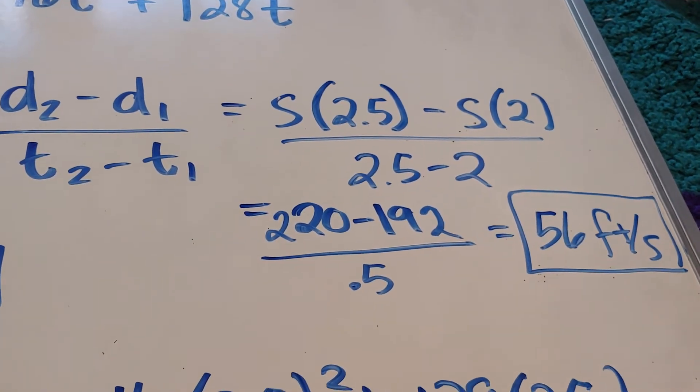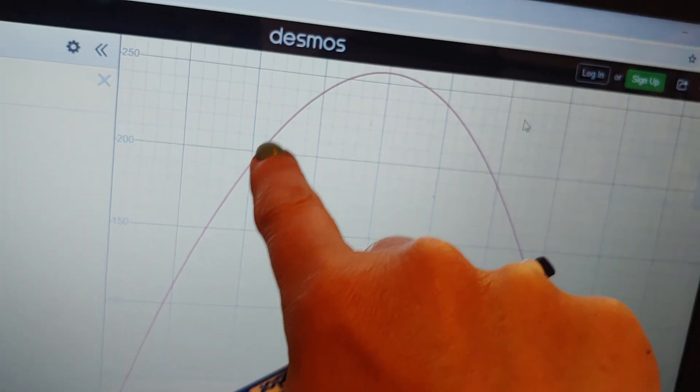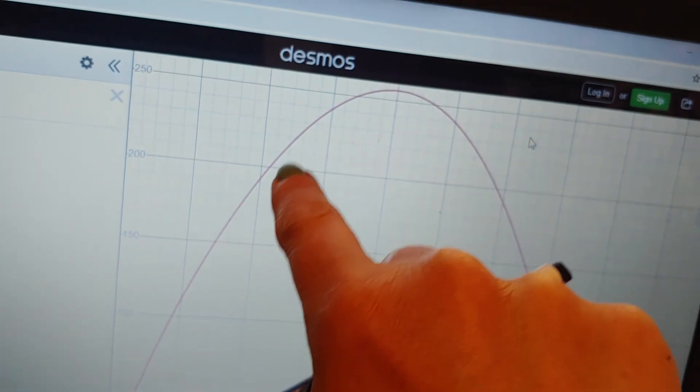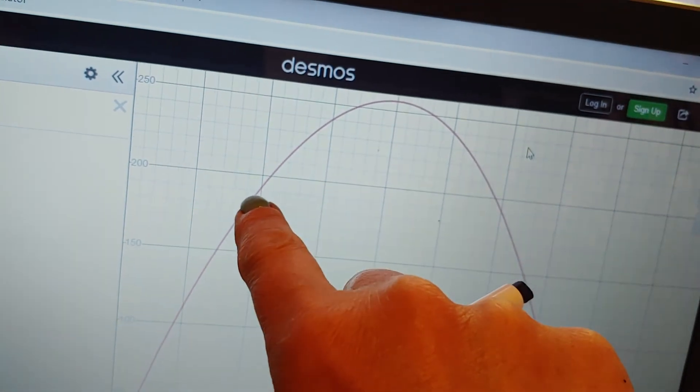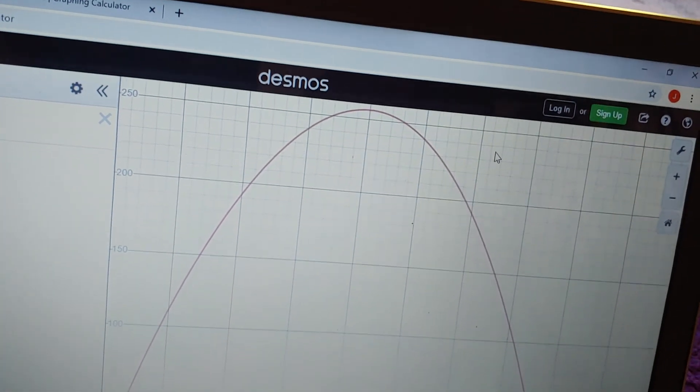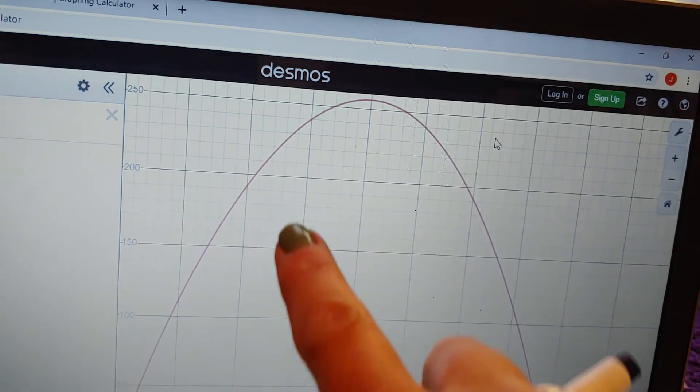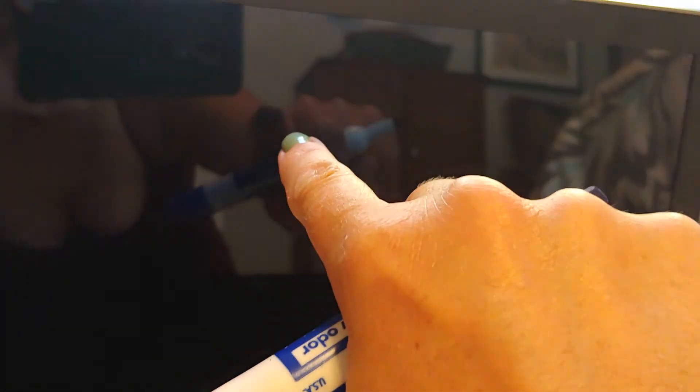Now what does that actually represent? What it actually represents is if I went to 2 and 2.5 and drew a line from 2 to 2.5, what I would get is the slope would be 56. And notice that that line from 2 to 2.5...